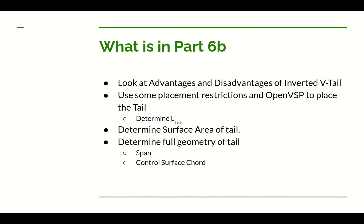In Part B, we'll look at the advantages and disadvantages of an inverted V-tail and V-tails in general, establish geometric restrictions for placing the V-tail, and use OpenVSP to work out its position. Once the placement is determined, we'll calculate the tail moment-arm length, use our equations to find tail surface area, and then derive the remaining geometry including tail span and control surface chord. That's it for Part A — see you next time.